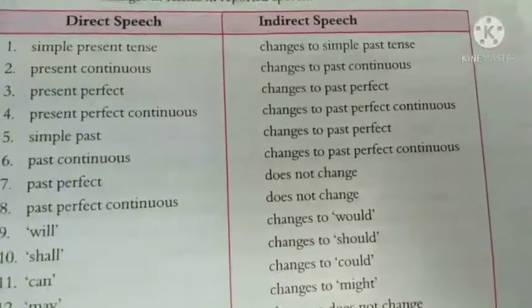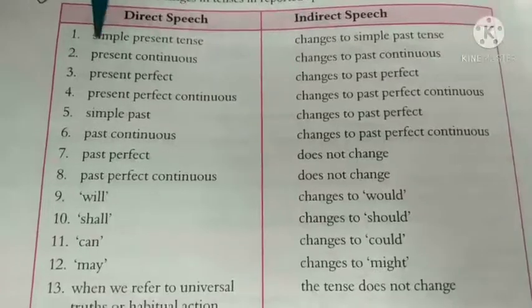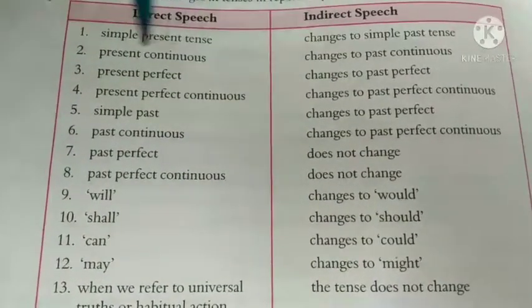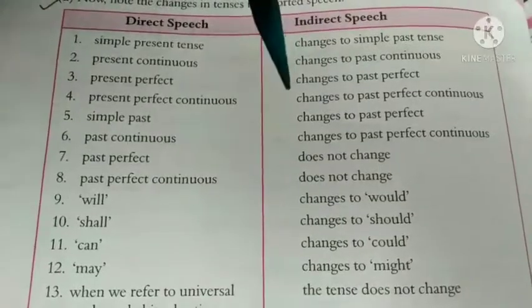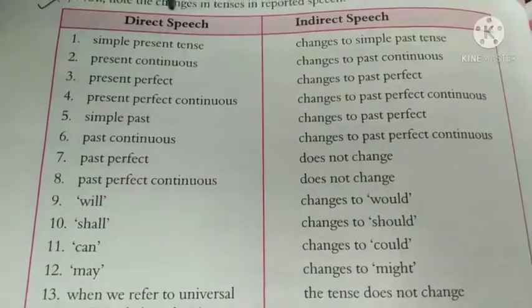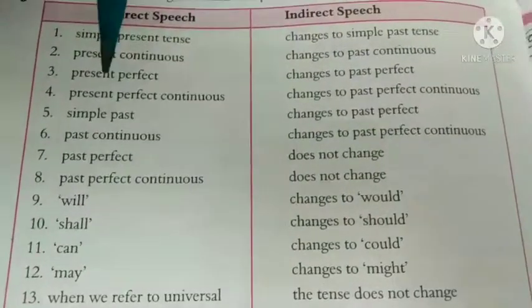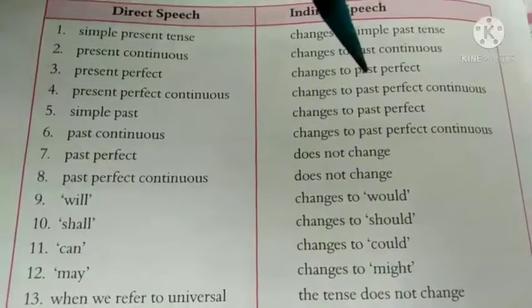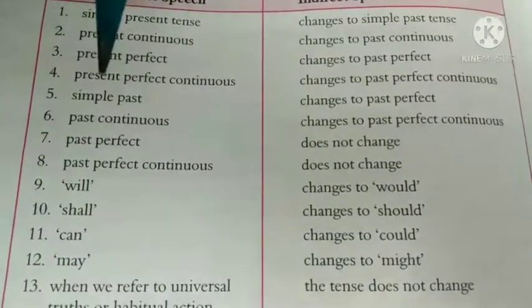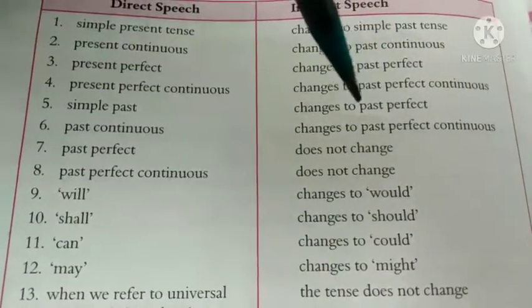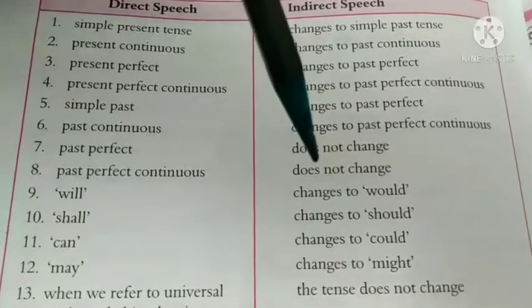Note the changes in the tenses: simple present changes to simple past; present continuous changes to past continuous; present perfect changes to past perfect; present perfect continuous changes to past perfect continuous; simple past changes to past perfect; past continuous changes to past perfect continuous; past perfect — no change; past perfect continuous — no change; will changes to would; shall changes to should; can changes to could; may changes to might.